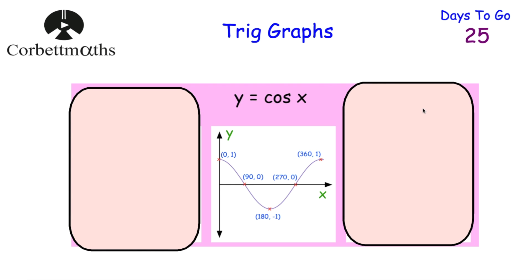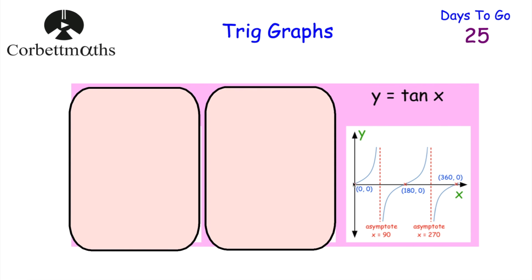Next, our tan graph — the graph of y equals tan x. It starts at zero; the tan of zero is zero. As you do the tan of 45 degrees, that's equal to one. Then as you do the tan of numbers approaching 90, they get very large — for instance, the tan of 89.9 is equal to 572.95. So the graph shoots up. And then if you do the tan of 90 degrees, you get a math error — that means it's undefined. So there is no tan of 90 degrees, and that's what we call an asymptote.